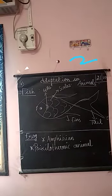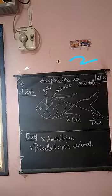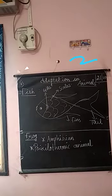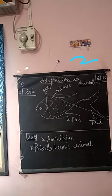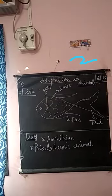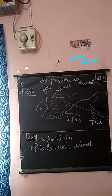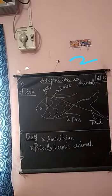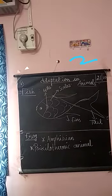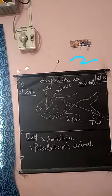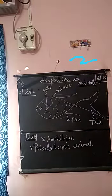The larval stage of a frog respires with the help of gills. However, an adult frog respires through skin and lungs. So to summarize: the larval stage respires through gills, while the adult stage respires through skin and lungs.